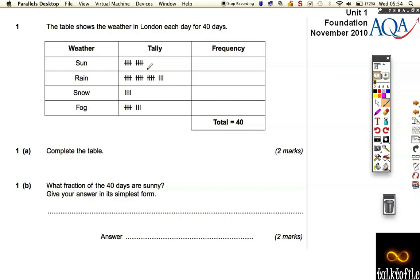The table shows the weather in London each day for 40 days, and it says to complete the table. So we're just going to count up the tallies. Now frequency just means how many, or the total.